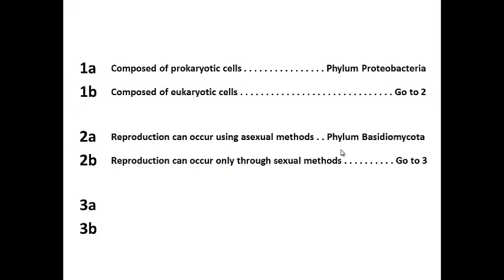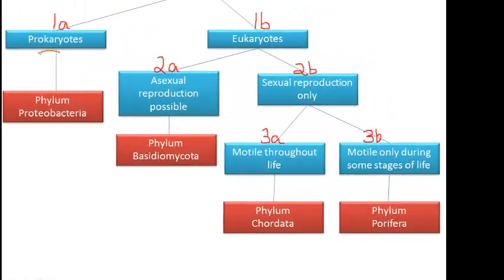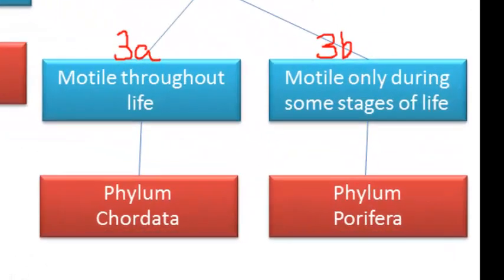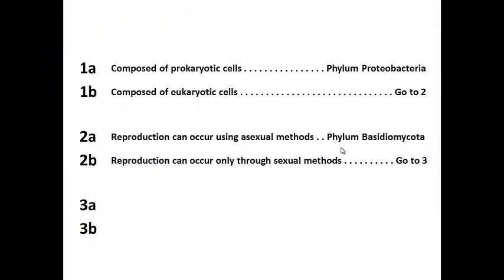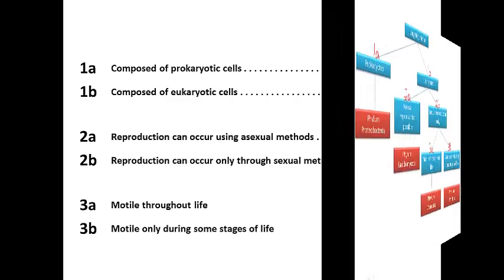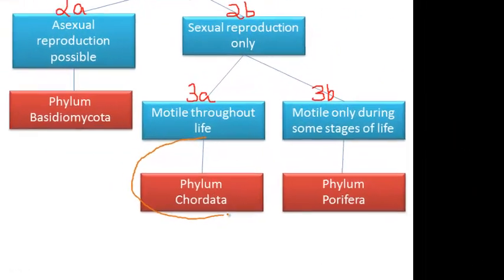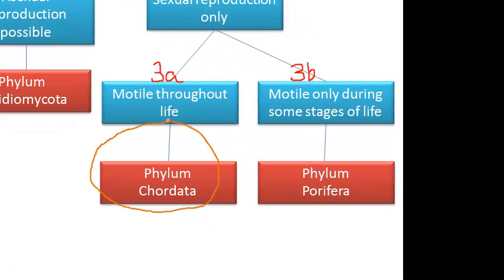I repeat the process for 3A and 3B. 3A and 3B both involve motility. The statements on my flow map are already phrased in a similar manner, so I will use those statements as they are written. 3A on my dichotomous key is written motile throughout life, while 3B is written motile only during some stages of life. According to the flow map, both 3A and 3B are terminal ends, so I fill in the correct phyla on the dichotomous key.